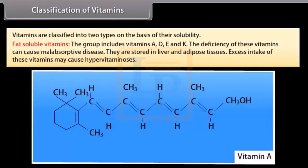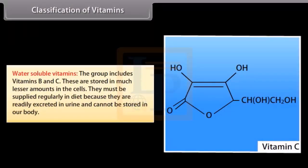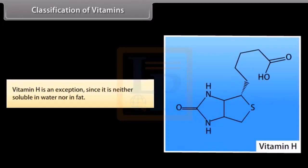Vitamins are classified into two types based on their solubility. Fat-soluble vitamins include vitamins A, D, E, and K. Deficiency of these vitamins can cause malabsorptive disease; they are stored in the liver and adipose tissues, and excess intake may cause hypervitaminosis. Water-soluble vitamins include vitamins B and C; these are stored in much lesser amounts in the cells and must be supplied regularly in the diet because they are readily excreted in urine and cannot be stored in the body. Vitamin H is an exception since it is neither soluble in water nor in fat.